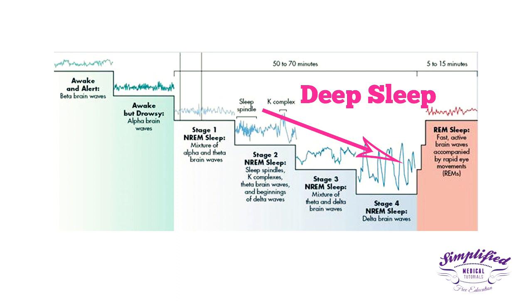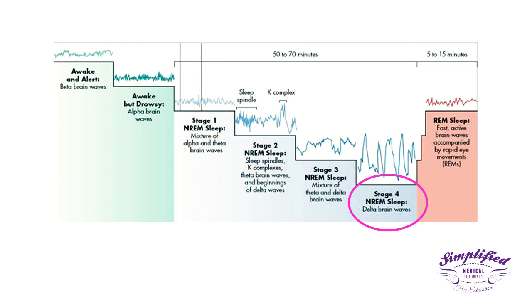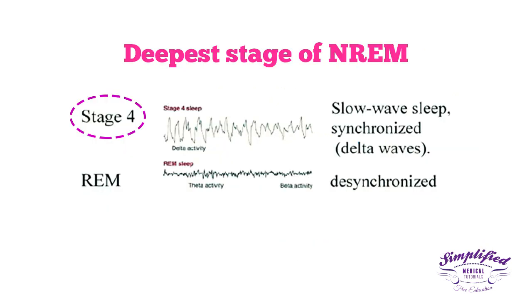In stage 4, maximum slowing with large waves is seen. It is sometimes referred to as slow wave sleep. Slow wave sleep is made up of the deepest stage of NREM sleep and is often referred to as deep sleep. It has a characteristic pattern of rhythmic slow waves which are synchronized.